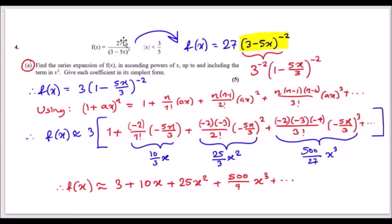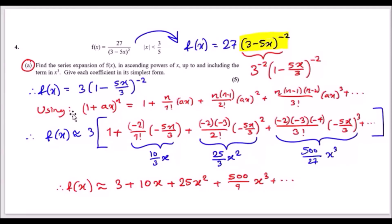First, rewrite in the standard form (1 + ax)ⁿ. Since the bracket is in the denominator with power 2, bring it to the numerator as power −2. There's also a coefficient of 3 inside, so factorize it out: 3⁻² comes out, leaving (1 − 5x/3)⁻². Combining 27 × 3⁻² = 3, the expression becomes 3(1 − 5x/3)⁻².